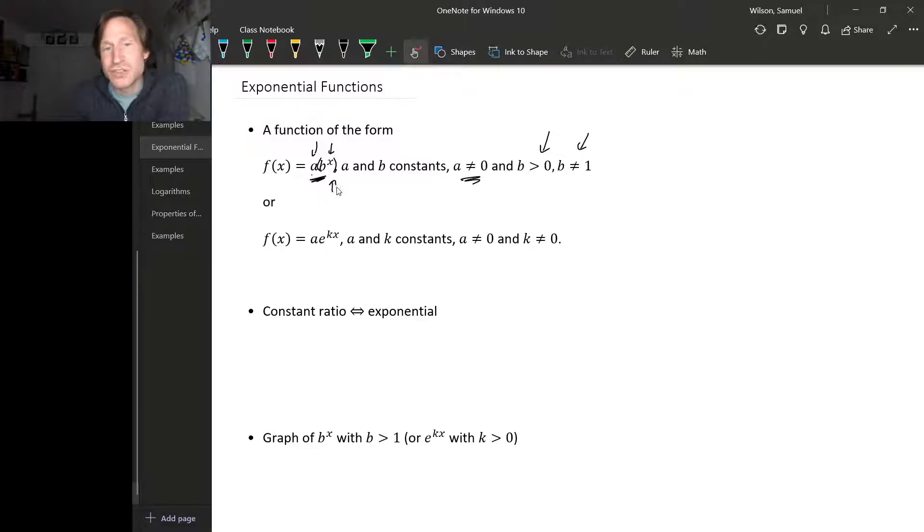Another way to write exponential functions is a times e to the kx. So k can be any constant except zero here. The reason why both of these are valid options for exponential functions is because you can always turn one into the other.